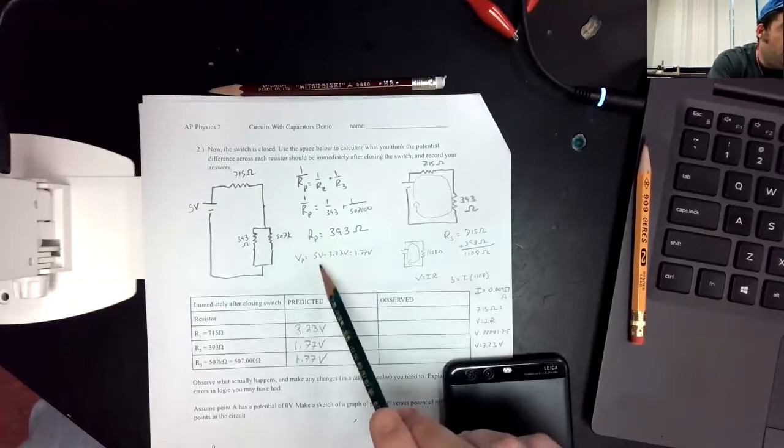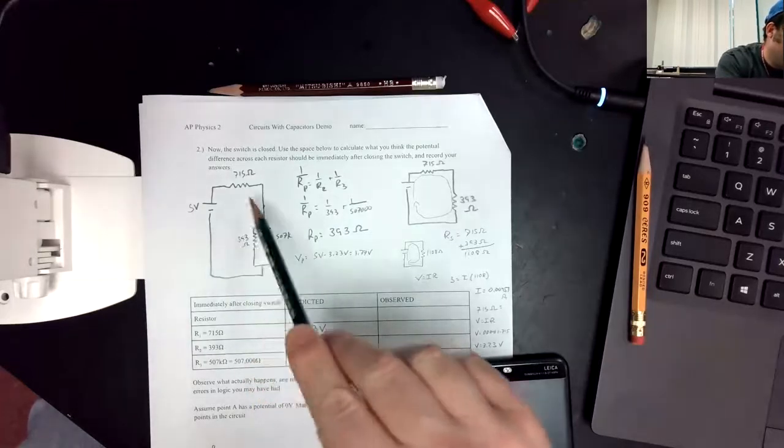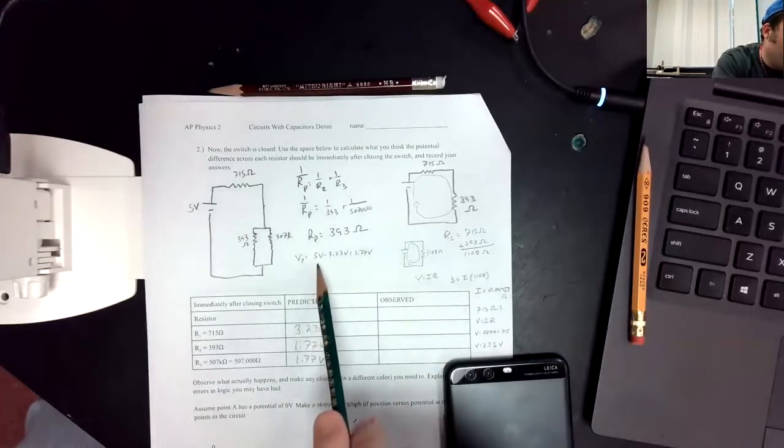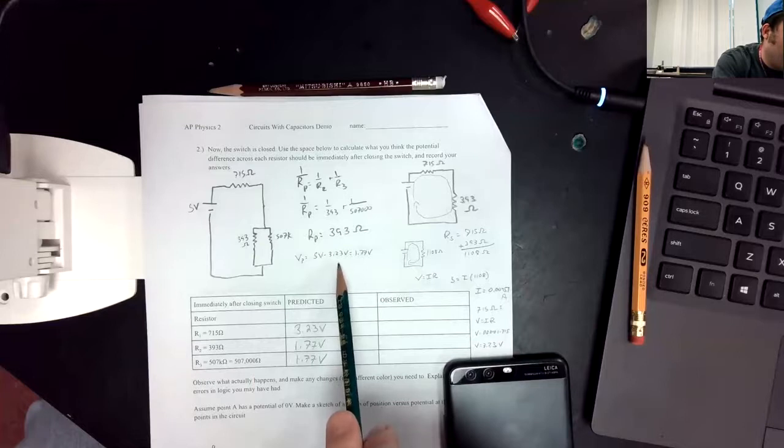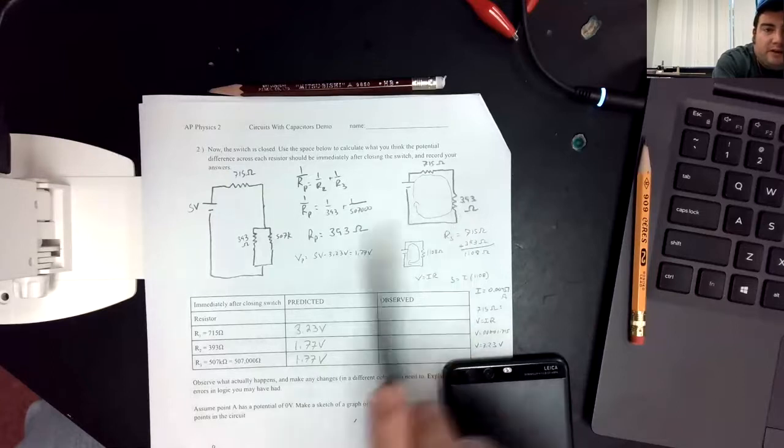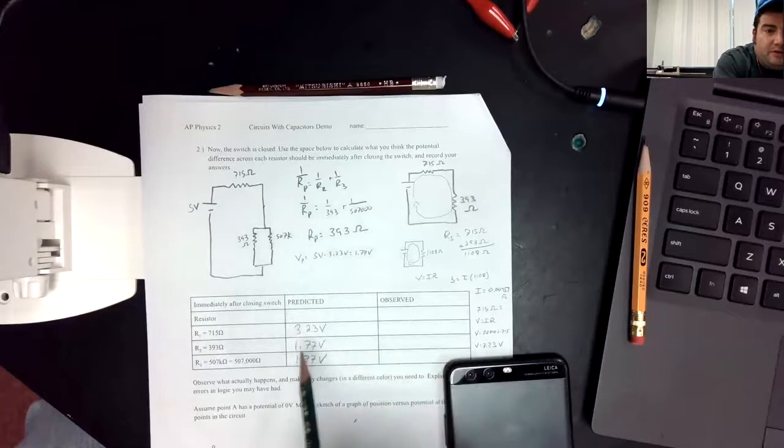Now according to Kirchhoff's loop rule, all of the additions and subtractions of potential around the circuit are zero. So if our input voltage is 5 and one of them is dropping 3.23, that means this resistor should get 1.77 volts as its voltage drop. And of course that's the potential across both of these two.